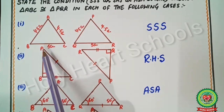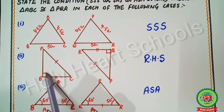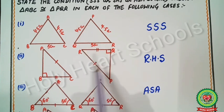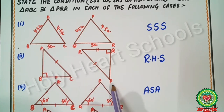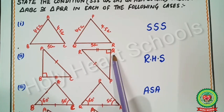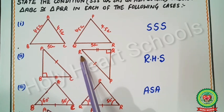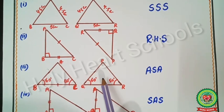In the second example, we again have triangle ABC and triangle PQR, but these are right-angled triangles. Each has a 90° angle. The hypotenuse: AC = PR. One side: BC = RQ. We have right angle, hypotenuse, and side — so we apply the RHS test. Triangle ABC is congruent to triangle PQR by RHS.